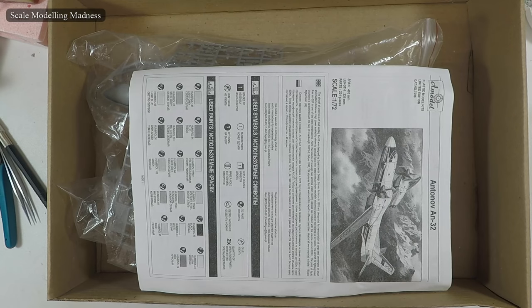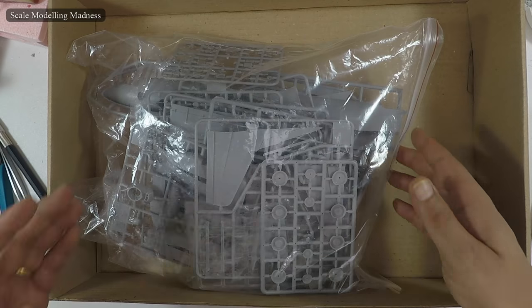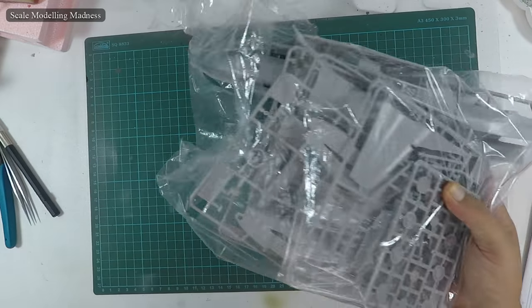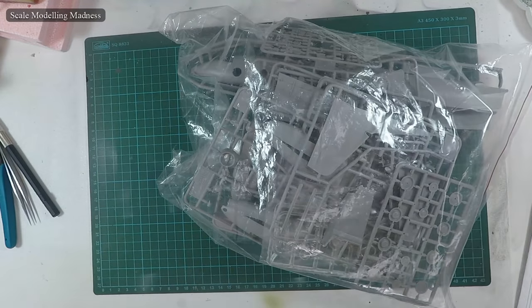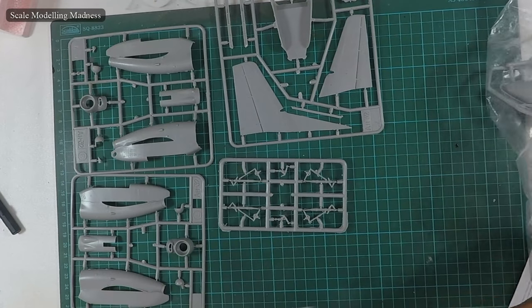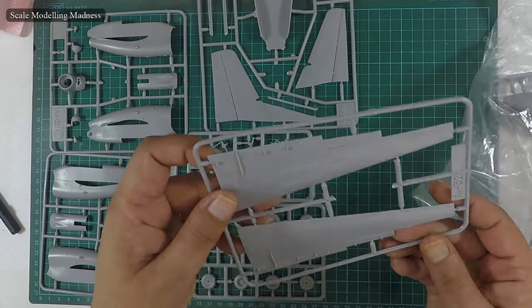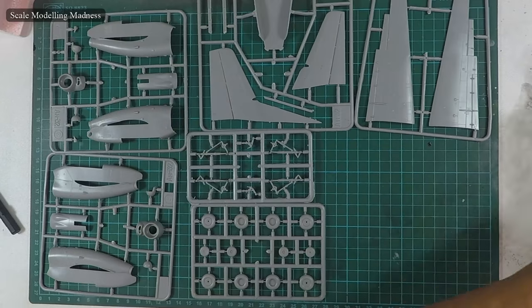Let's open the box and see what's inside. We have the instructions in black and white and a large bag with all the plastic parts. We have 7 small sprues here. But wait, that is not all. There are more. Lots more. In all, 18 plastic sprues and 2 clear sprues.